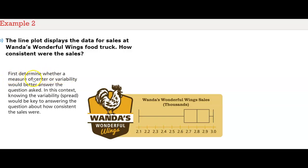First, determine whether a measure of center or variability would better answer the question asked. In this context, knowing the variability spread would be key to answering the question about how consistent the sales were.